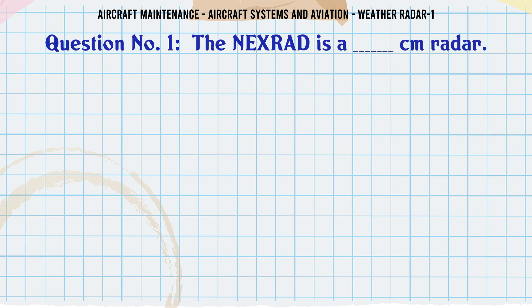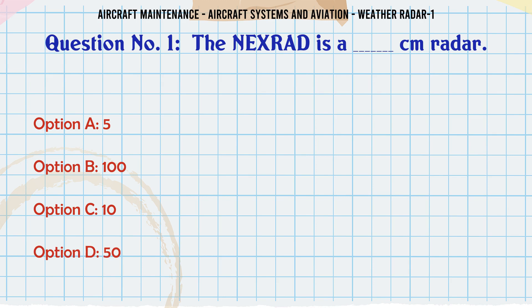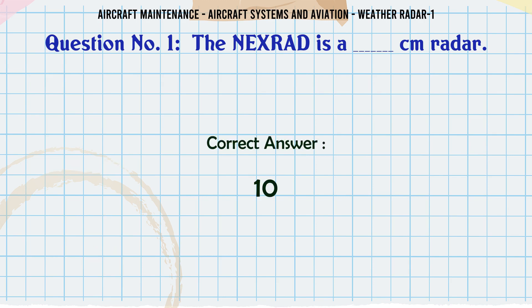The next question is about a CM radar. A: 5. B: 100. C: 10. D: 50. The correct answer is 10.